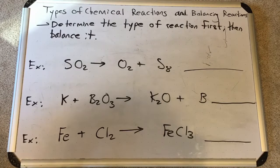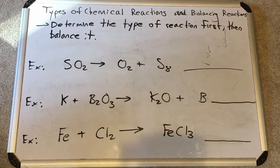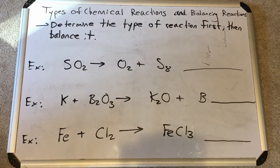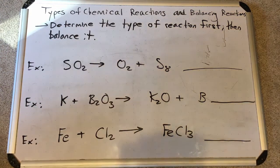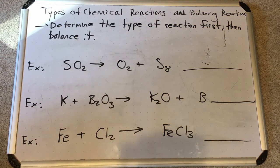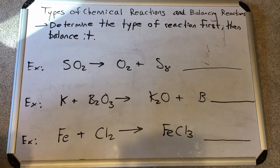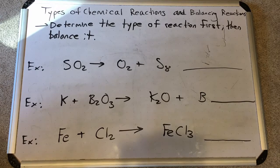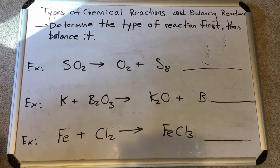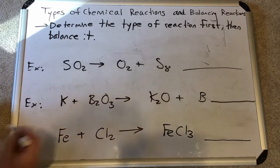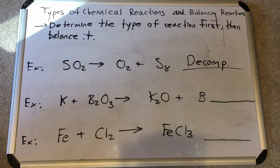Now let's look at some examples with real elements and compounds and bring in the balancing. This first one: sulfur dioxide SO2 yields O2 plus S8. We have one compound on the reactant side and two elements on the product side — they broke apart from the compound. That would be a decomposition reaction.